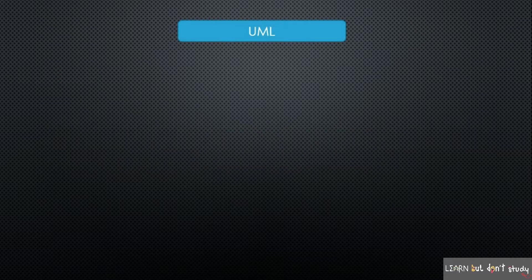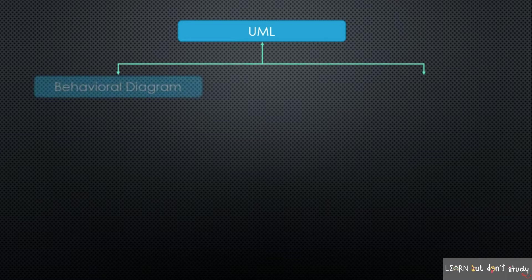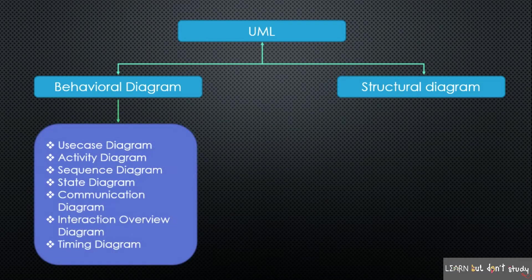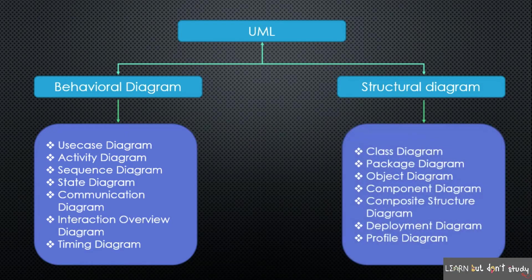In this UML diagram, there are two types. One is Behavioral Diagram and the other is Structural Diagram. In the Behavioral Diagram, there are sub-diagrams: Use Case Diagram, Activity Diagram, Sequence Diagram, State Diagram, Communication Diagram, Interaction Overview Diagram, and Timing Diagram.